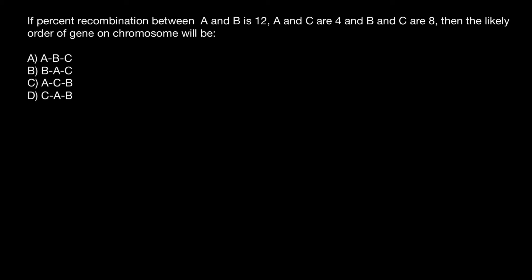Hello, and welcome to Nikolai's genetics lessons. Today's question is: if percent recombination between A and B is 12, A and C is 4, and B and C are 8, then the likely order of the gene on the chromosome will be - and you have to choose one of these answers.